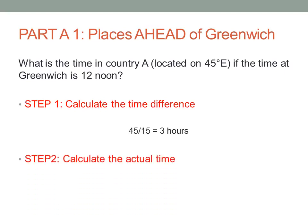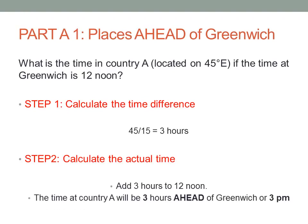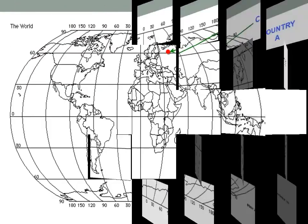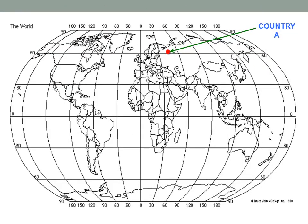Step 2: we're going to calculate the actual time. Considering that country A is east of Greenwich, 3 hours east of Greenwich, we're going to add 3 hours to 12 noon. The time at country A will be 3 hours ahead of Greenwich, or 3 pm. Here is our graphical representation of country A, located at 45 degrees east of the Greenwich meridian.